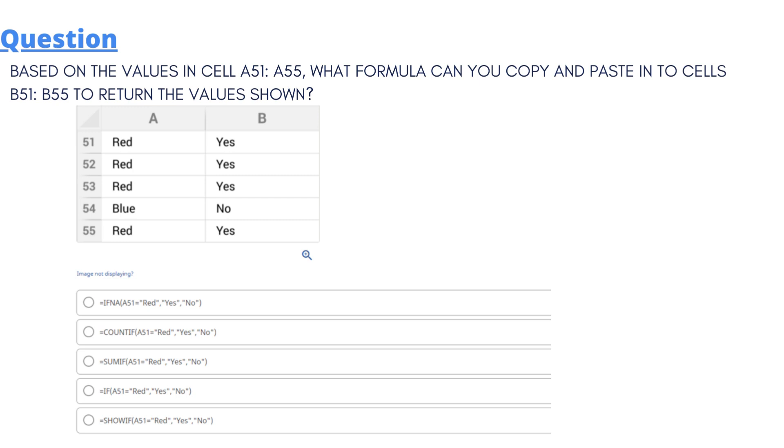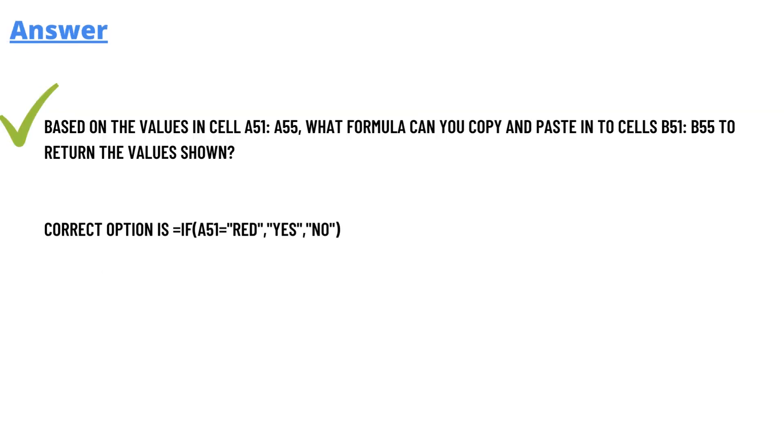We have given five options here. Red, red, red, blue, red in column A, and in column B we have yes, yes, yes, no, yes. So the formula options are given below. We have five multiple choice options. So the correct answer